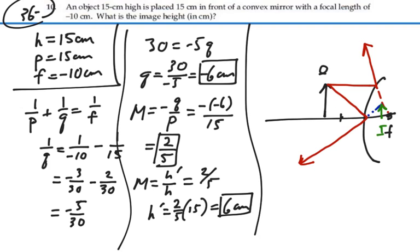Object is out here at positive 15. The height is 6 centimeters as opposed to 15 centimeters for the object. So it's two-fifths of the height, and it is upright.